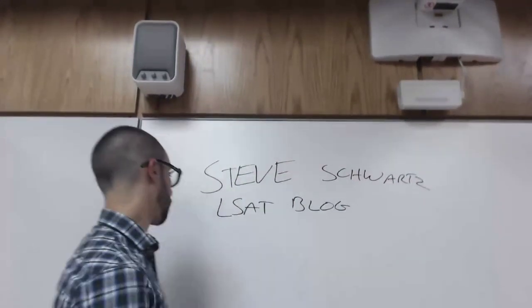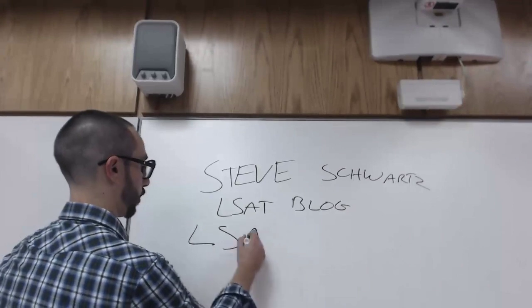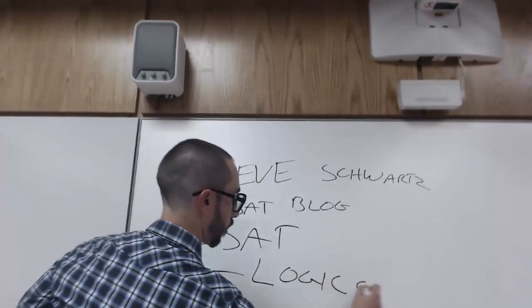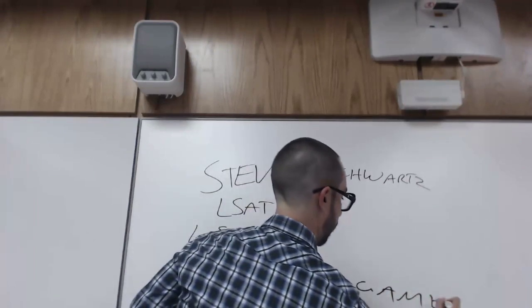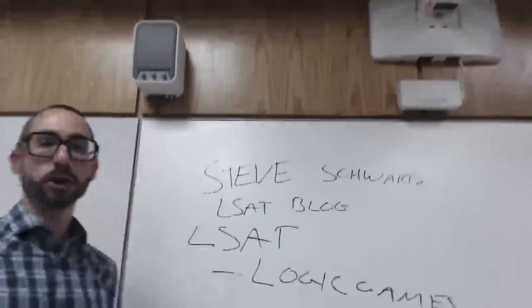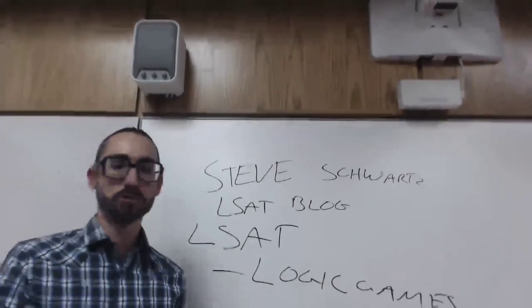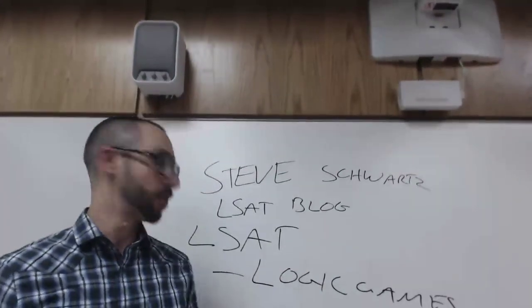Now, what's on the LSAT? The LSAT has three sections. It has logic games, which are like puzzles. They're like short, logical, mathematical sorts of puzzles. They're pretty scary at first, but they're actually quite learnable in the end.